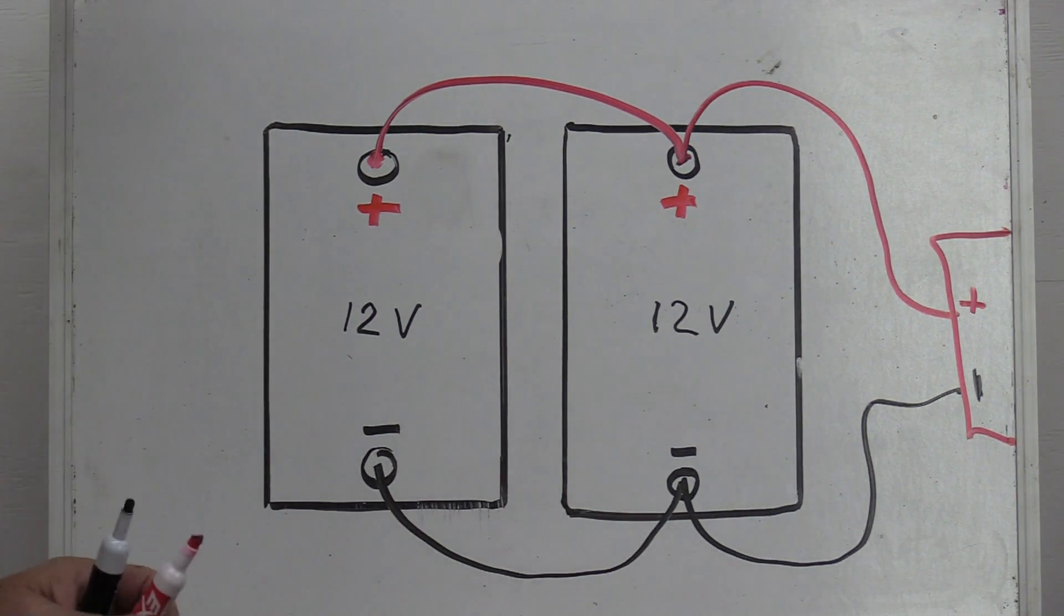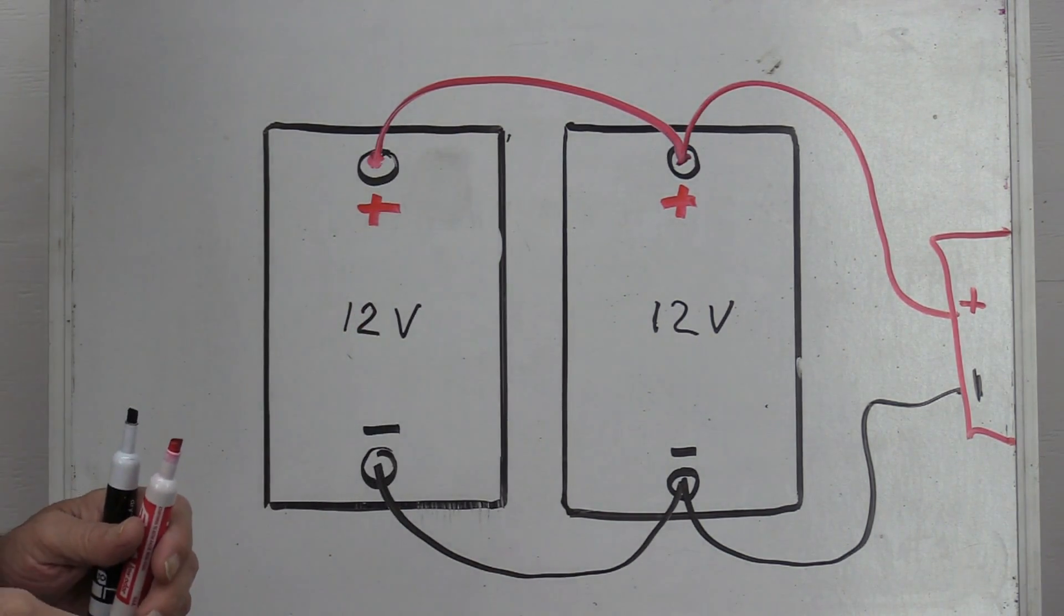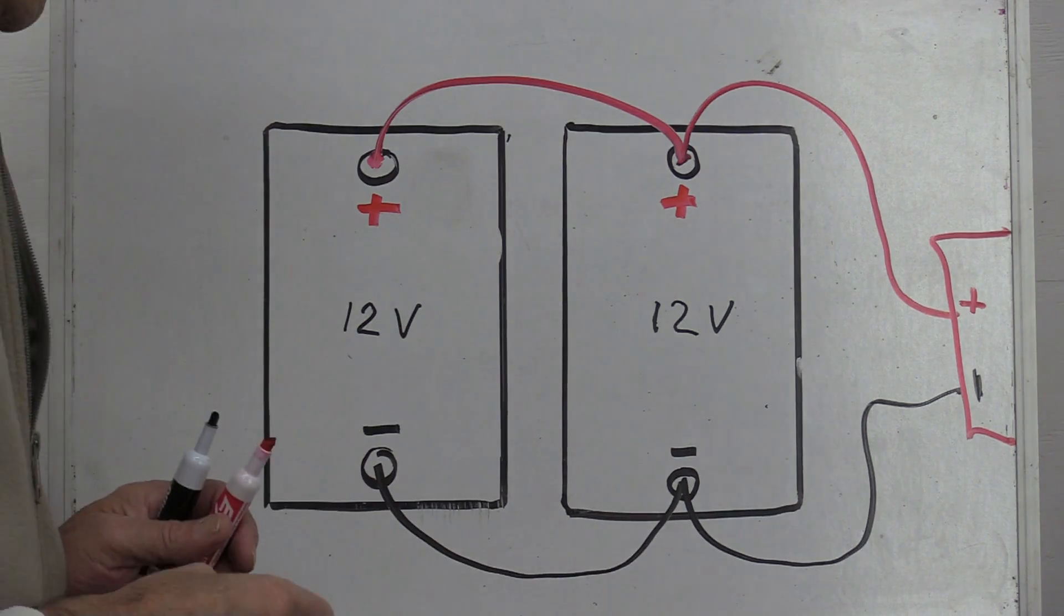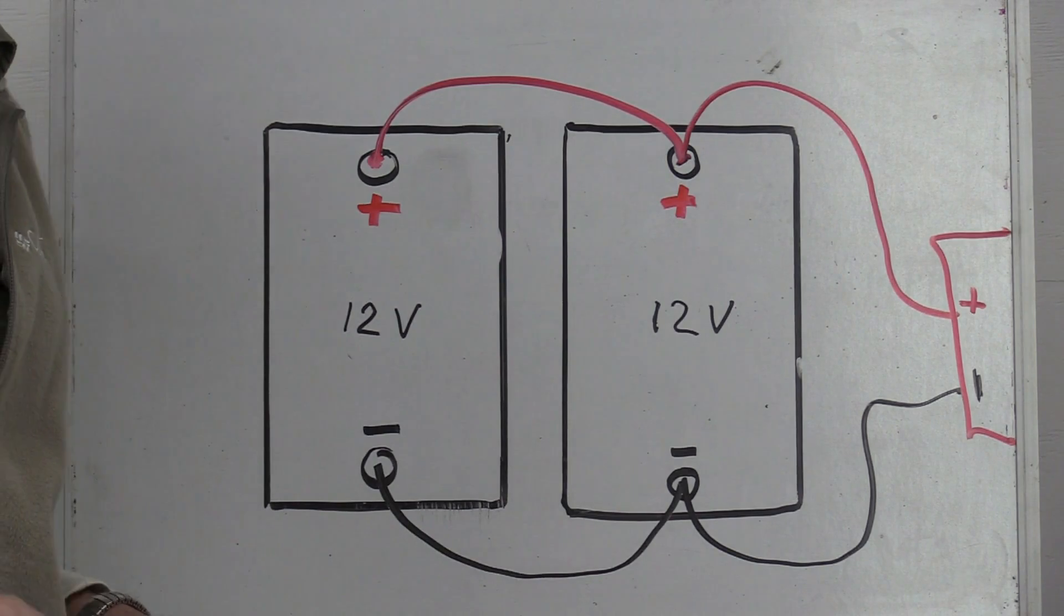Now, if you want to know what series wiring means, that means I've got a 24 volt inverter and a 24 volt system and now I want a 24 volt battery bank and that will be done by series wiring these batteries.